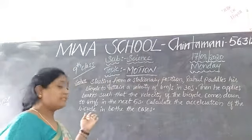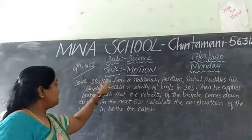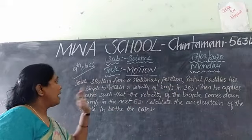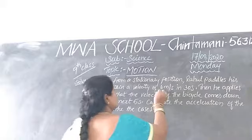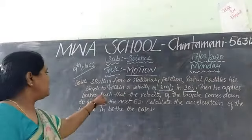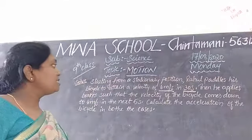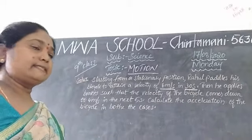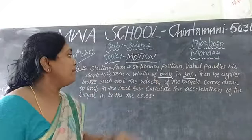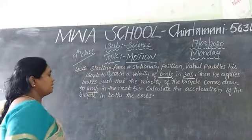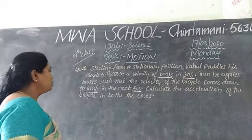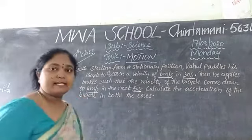Here is our problem. Starting from a stationary position, Rahul pedals his bicycle to attain a velocity of 6 meter per second in 30 seconds. Then he applies brakes such that the velocity of the bicycle comes down to 4 meter per second in the next 5 seconds. Calculate the acceleration of the bicycle in both cases.